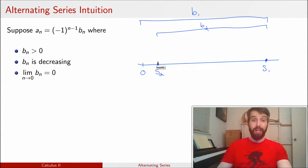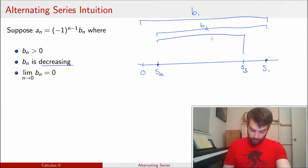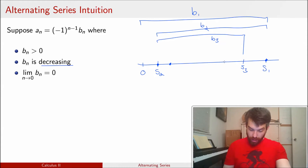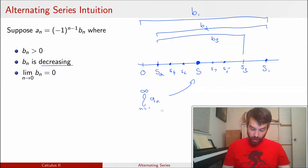This process keeps going — I get s4, s5, s6, s7, all starting to cluster together. Somewhere in the middle of all this clustering, there is a point I'll call s, which I claim is the sum from 1 to infinity of a_n.